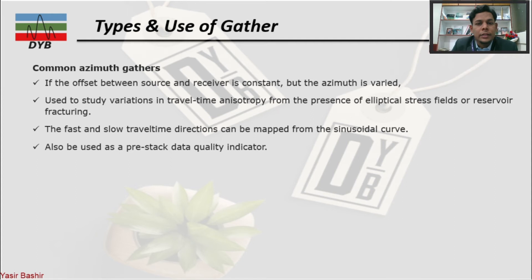The fast and slow travel time directions can be mapped from the sinusoidal curve, because in the case of PP or PS waves — which are normally used for three-component or four-component data — the azimuth behavior is different. It can also be used as a pre-stack data quality indicator.